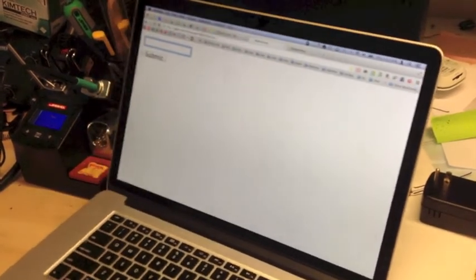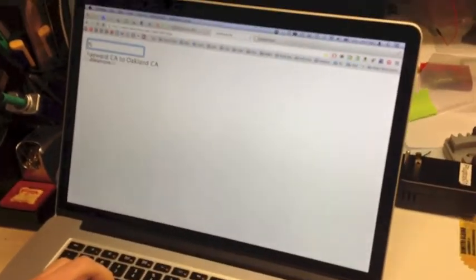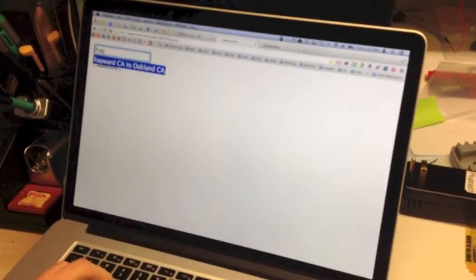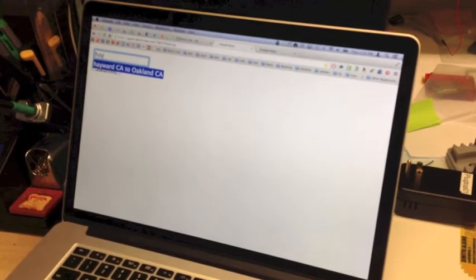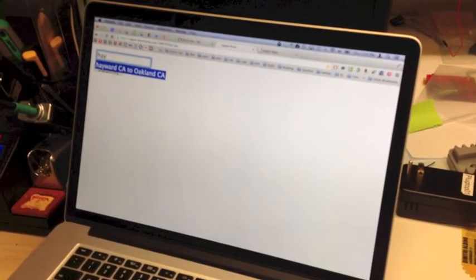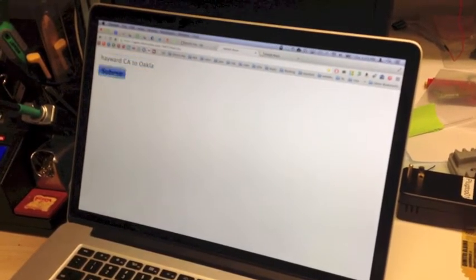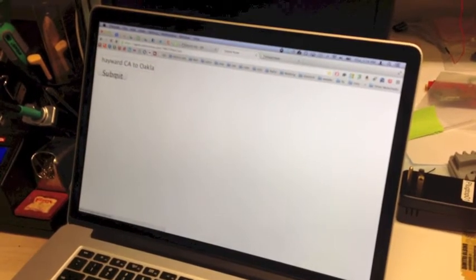It's just a little web form. But if I put in a route string, say, Hayward, California to Oakland, California, which I happen to know for a fact right now is experiencing some heavy traffic, and we'll send the agent off to check that out.